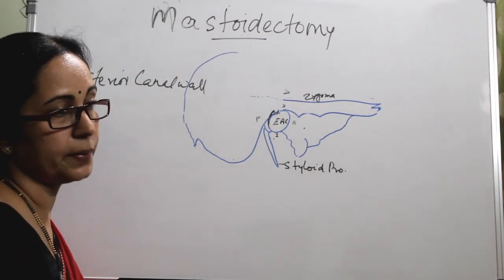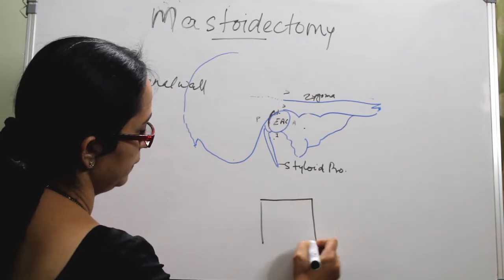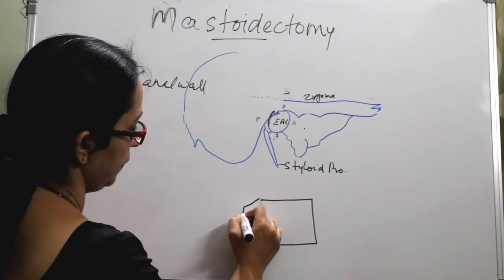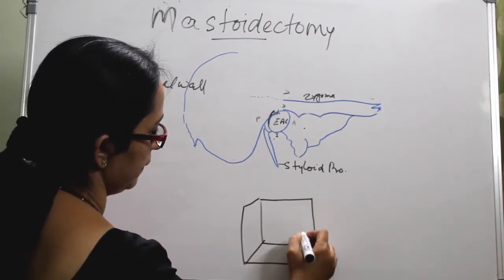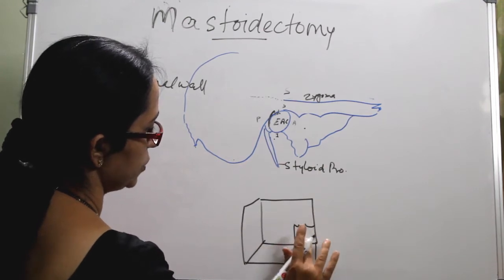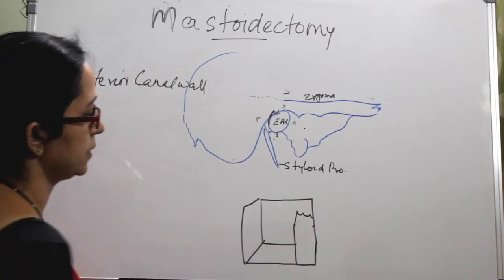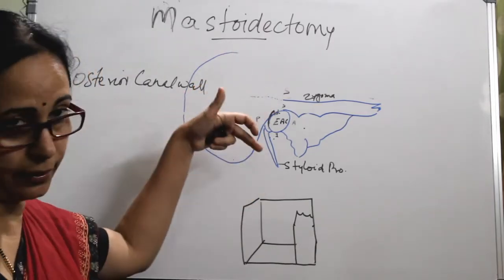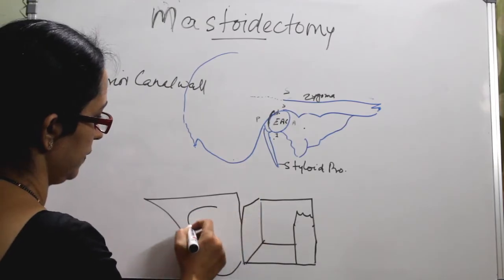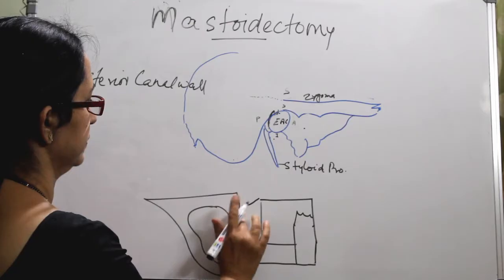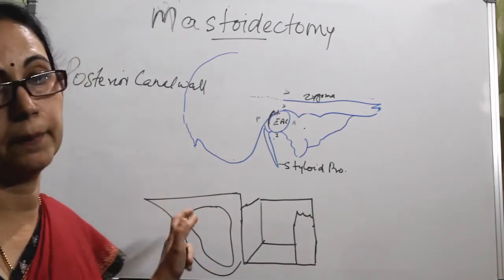If we remove the lateral wall of the middle ear, that is the tympanic membrane, your middle ear will have just a medial wall, a posterior wall, a floor, and also an anterior wall. This is the posterior wall of the middle ear. Posterior to this posterior wall comes the mastoid area.